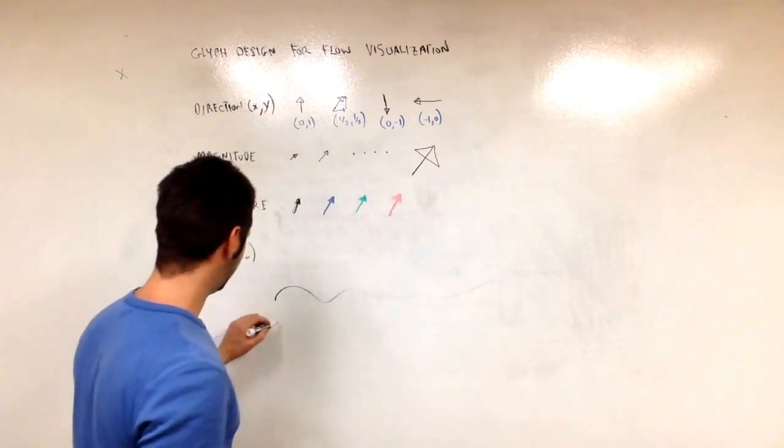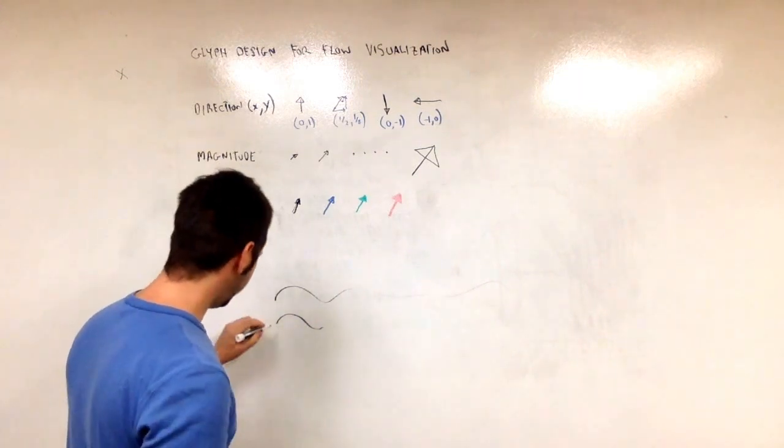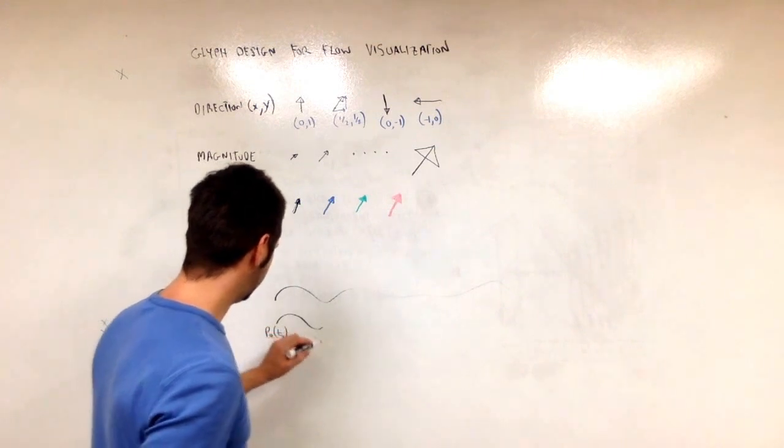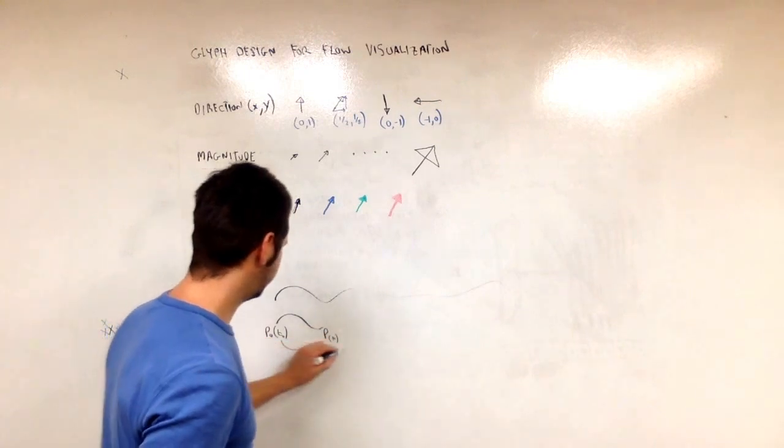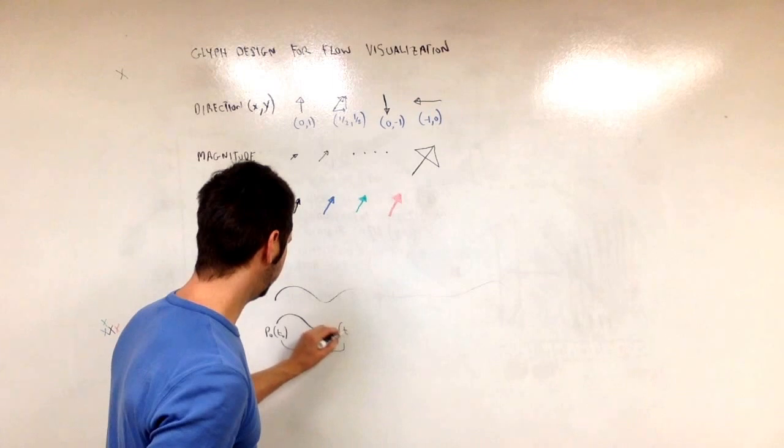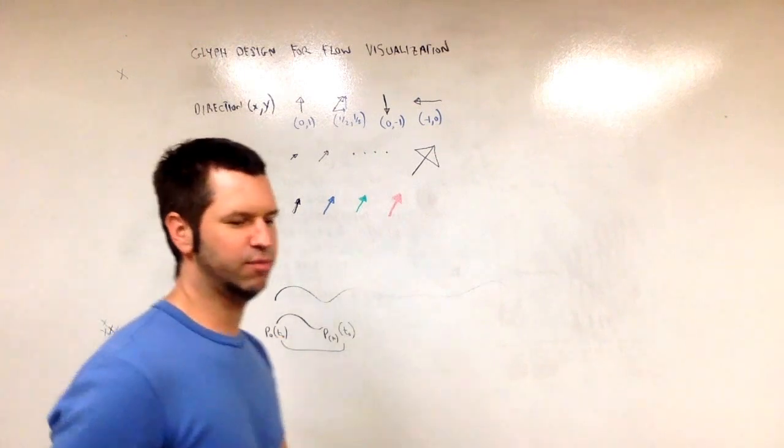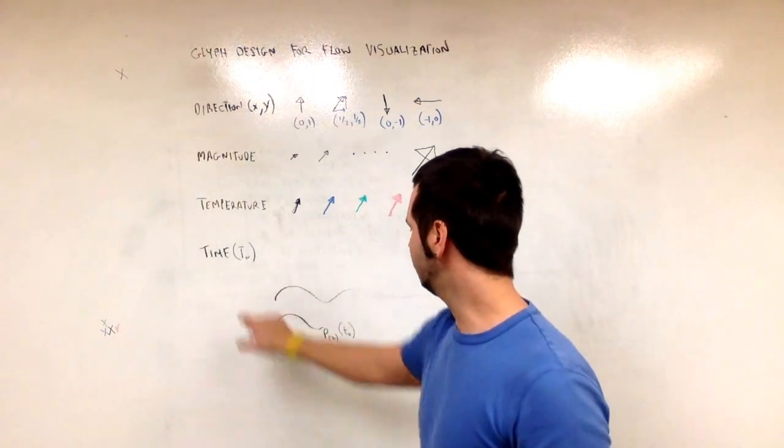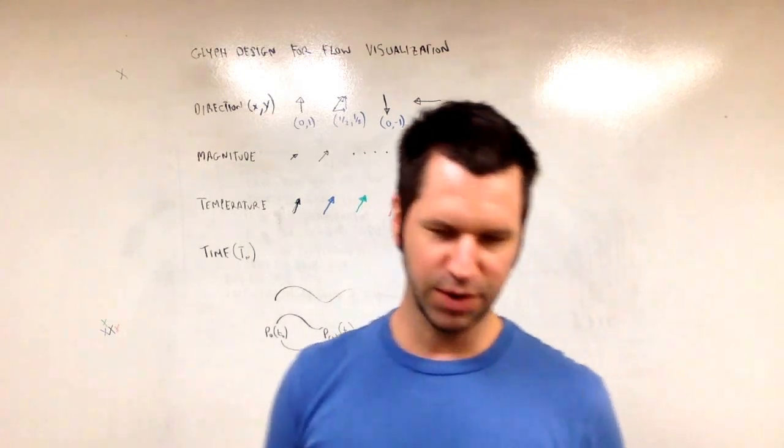So this is a streamline. A short streamline or a streamlet is just a short curve. And a streamline starts at a position p naught associated with time naught, and it has a position p n. But guess what? The time of the encoding is still the same.